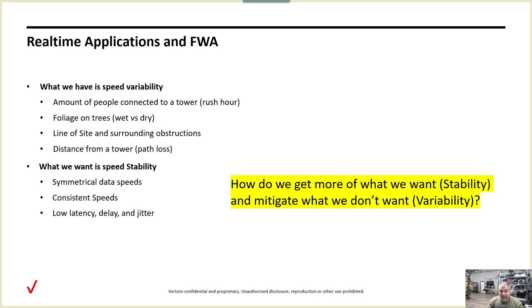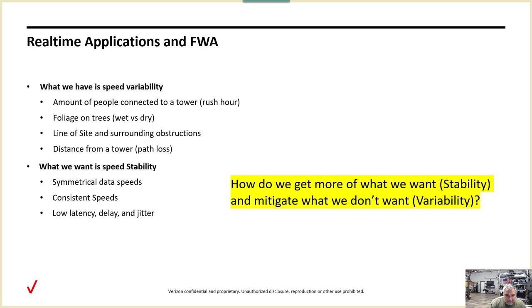Everyone with fixed wireless access can't erect a tower, put an antenna 200 feet in the air, and transmit at the same wattage our towers do — that's just not possible. We want consistent speeds, low latency, low delay and jitter. We've known that for decades. So what can we do? How do we get more stability and mitigate variability?